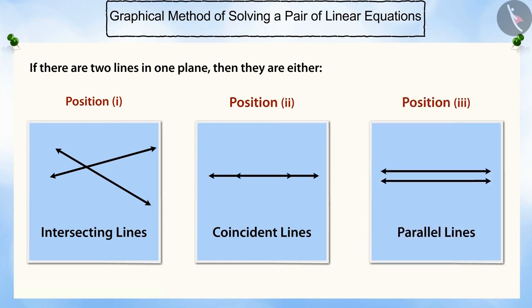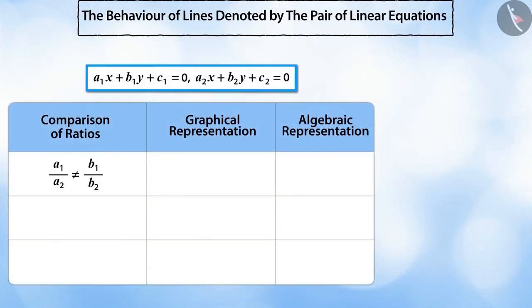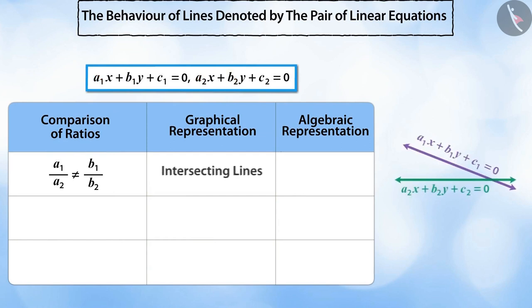These three conditions can be represented for a pair of linear equations in any two variables as follows. If the ratio of the coefficients of x in the pair of equations is not equal to the ratio of coefficients of y, the lines denoted by the pair of equations will be intersecting lines. In this case, the solution to the pair of equations is the unique solution.